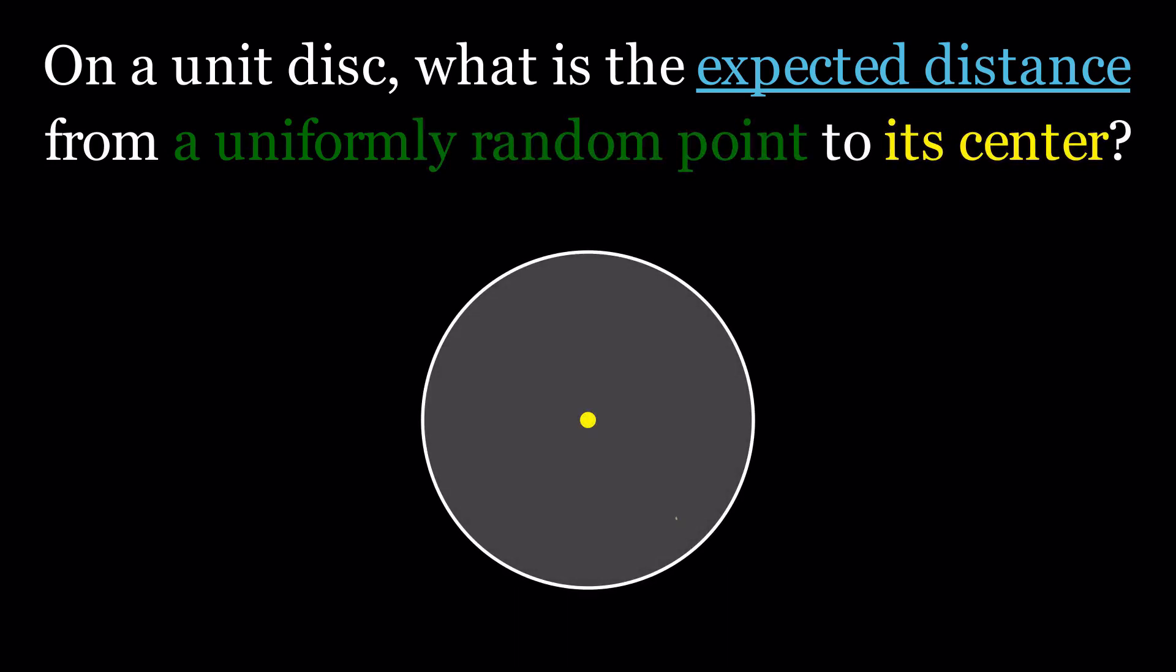Briefly, and maybe letting our intuition take over, it might seem that the answer is 1 over 2, given that the distance is between 0 and 1, and the point is uniformly distributed. If that were the case, your intuition is wrong.